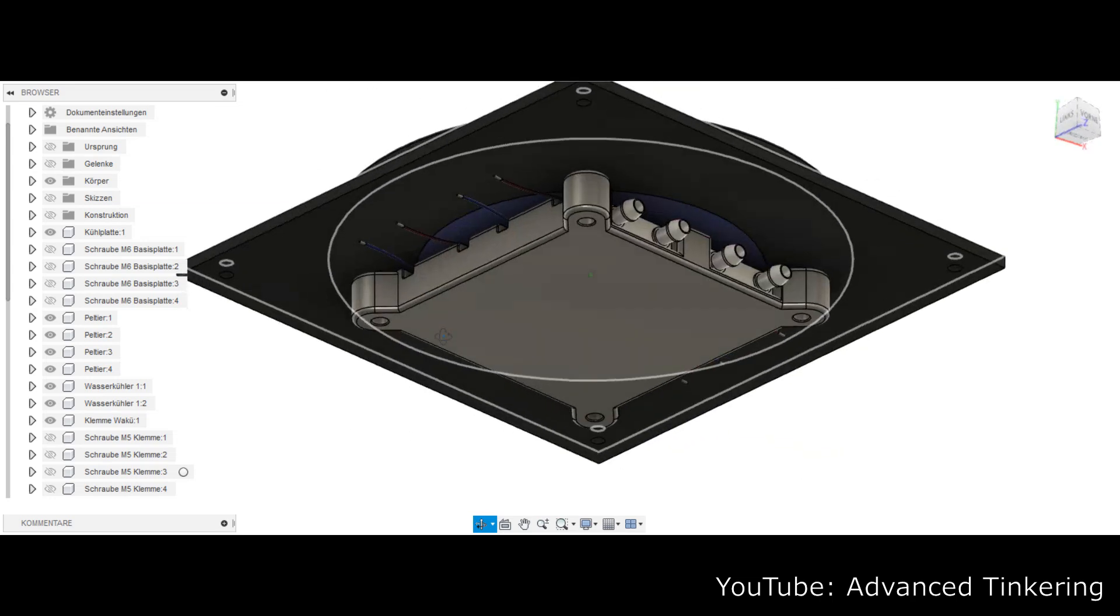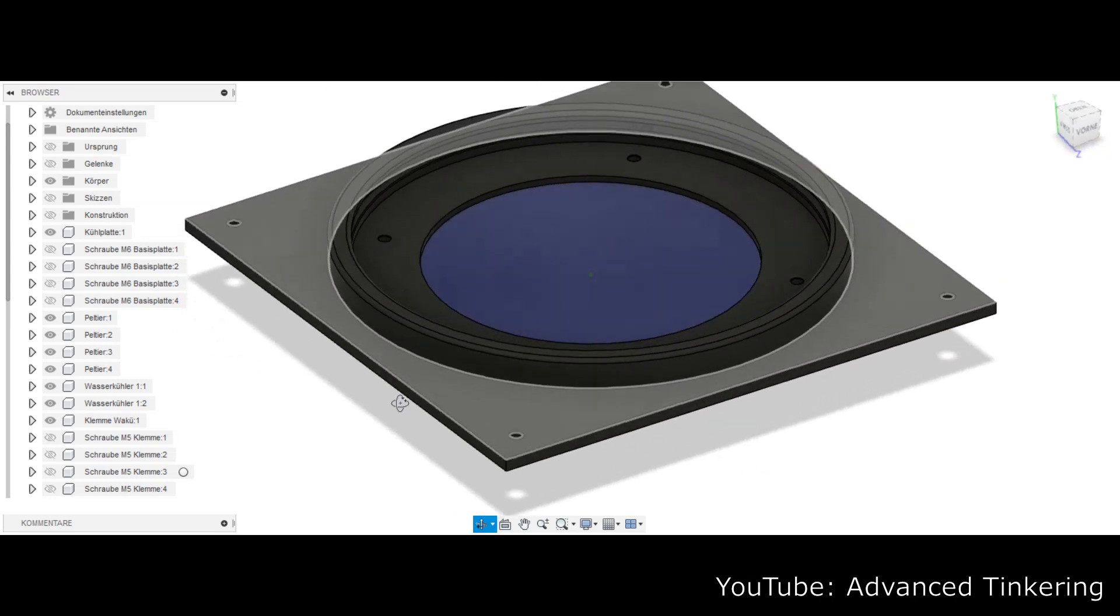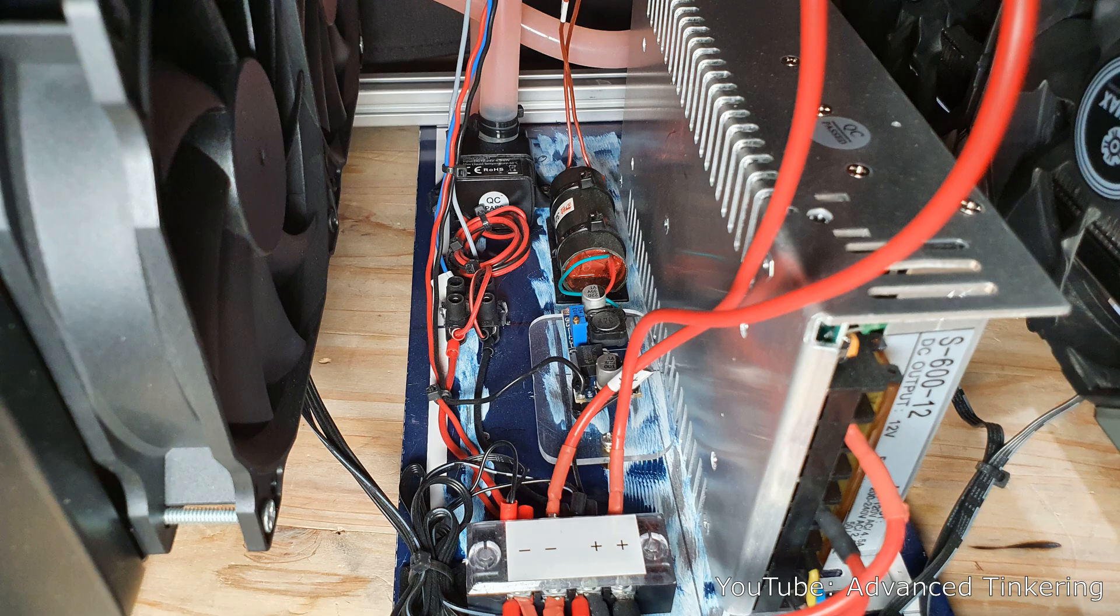Each of the Peltier elements draws about 8 amps at 12 volts. I connected them in parallel so I could use a 12-volt, 50-amp power supply. This power supply also supplies the small water pump for the cooling loop, a step-down converter that feeds about 1.5 volts to the high voltage generator, and the fans of the radiators.